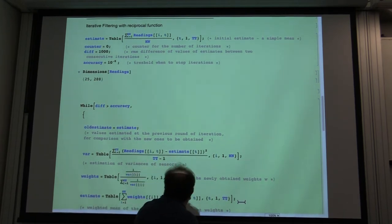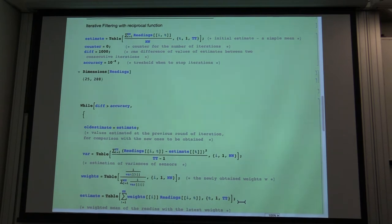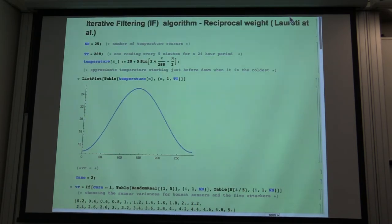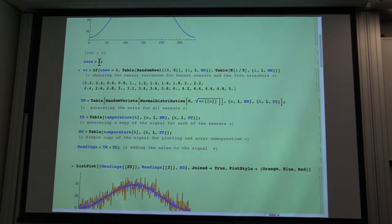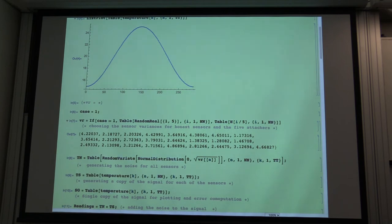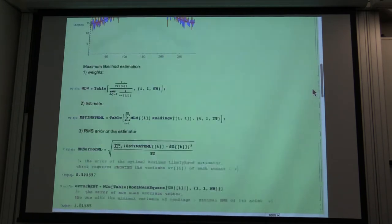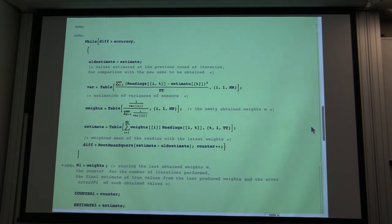This should be actually just T. It makes no big difference, but because it's not just the mean, so let's remove this T minus 1 so that it doesn't confuse you. So let us choose the experiment, which is with randomly generated variances. So that's case 1. So we will randomly generate the variances. And let's see how our algorithm performs.